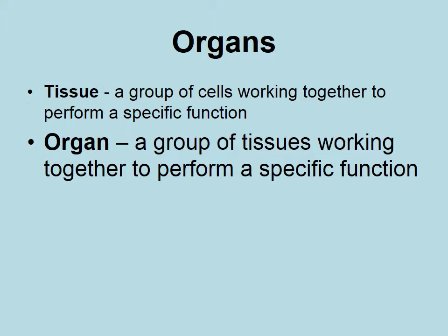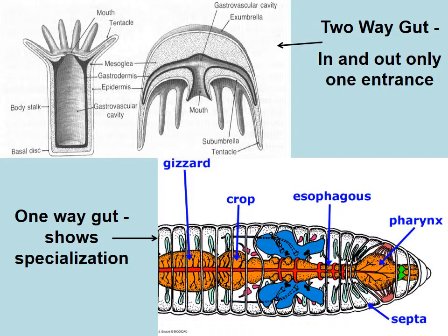As we go through this class, we are working our way up the evolutionary ladder of complexity. The ability to have organs — and another feature of these organisms that we didn't see in the Cnidarians and Platyhelminthes, but we did see in the Nemertians — is where we see a one-way gut.